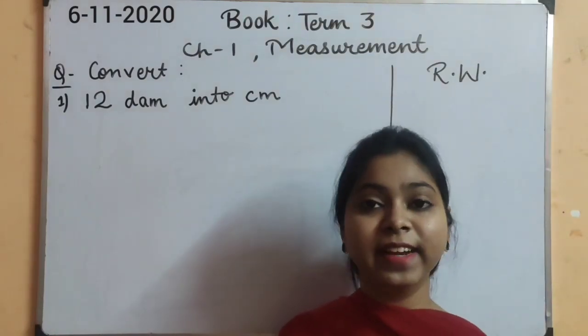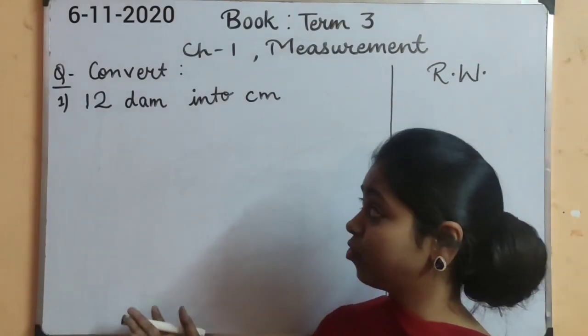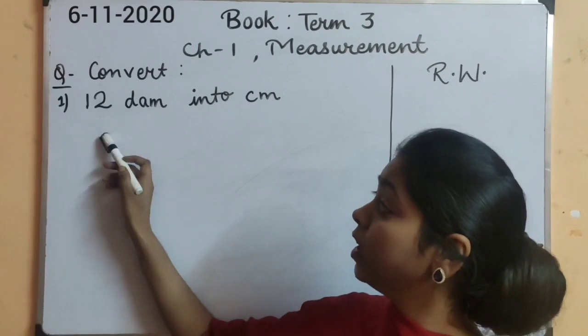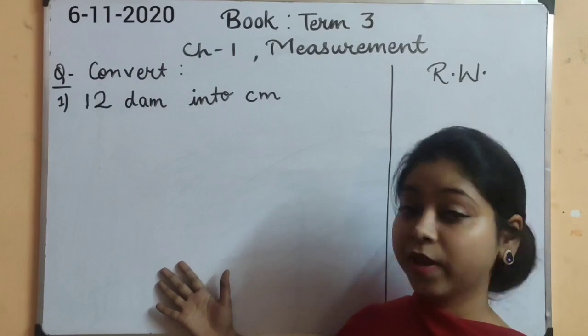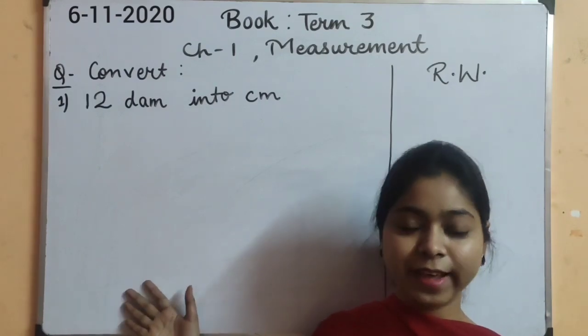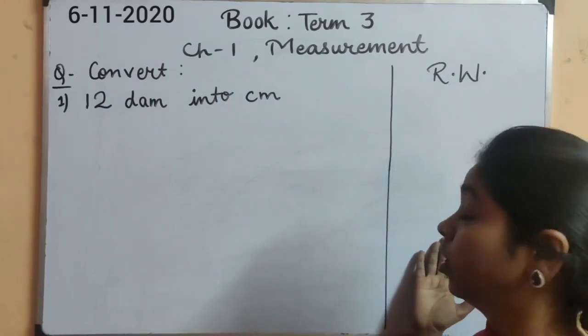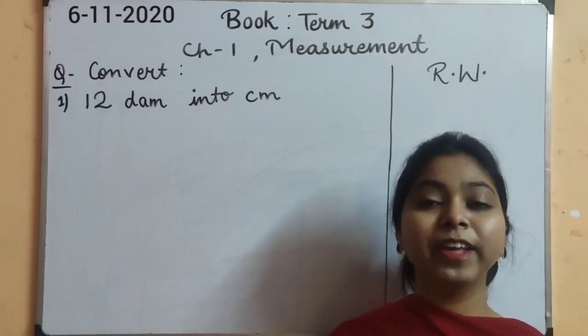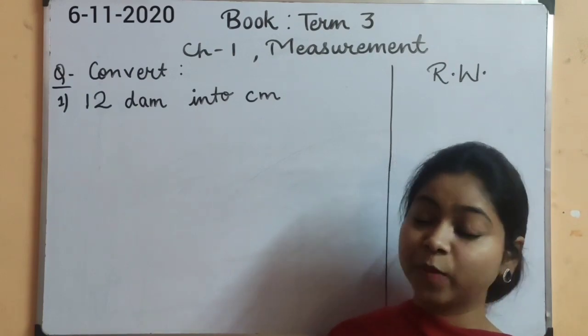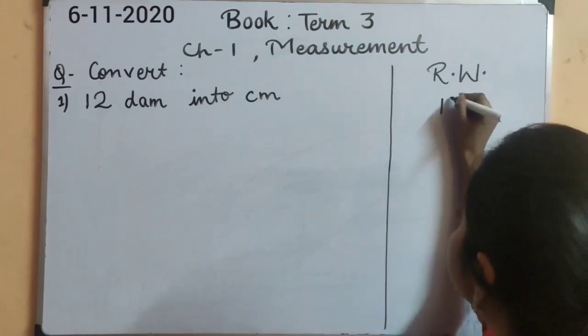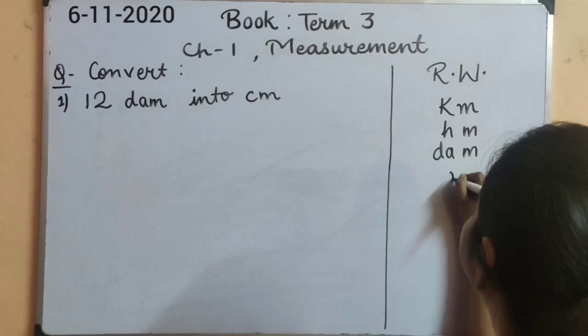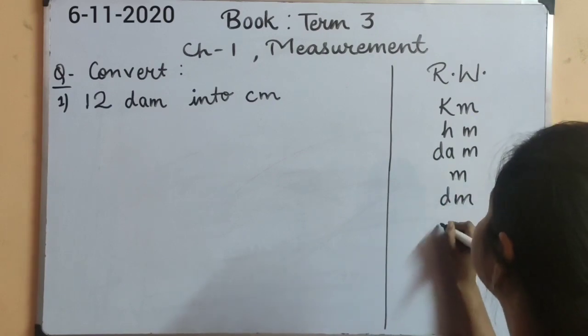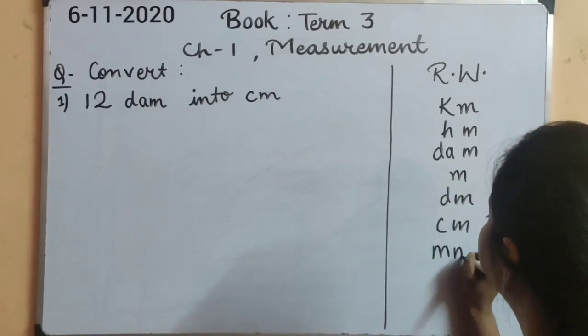Now let's start to solve our question. Convert 12 decameter into centimeter. To convert this question, first of all we will take the help of our rough work column. Make a rough work column in the right side of your notebook and write all the units of length: kilometer, hectometer, decameter, meter, decimeter, centimeter and millimeter.